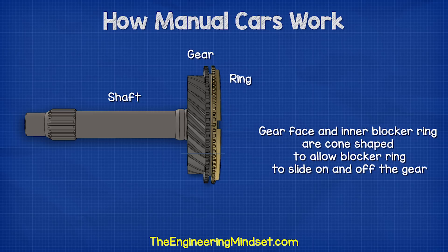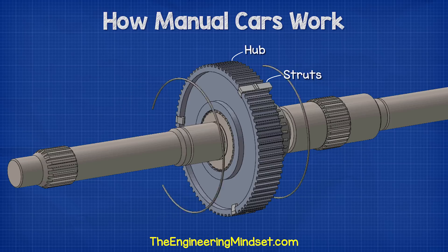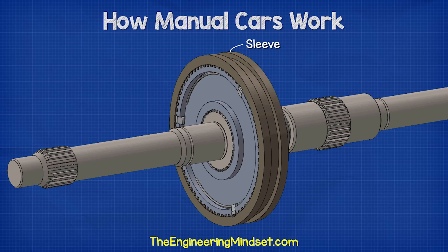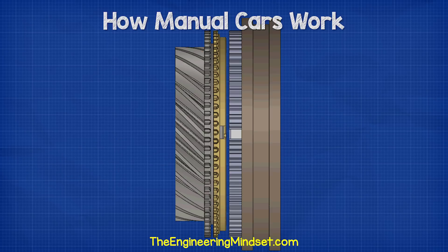This allows the blocker ring to easily slide on and off of the gear. We also have some small struts, which are inserted into the slots of the hub. These are held in place by a radial spring, which pushes them outwards. The sleeve sits over the struts and the hub. A ridge on top of the strut interlocks with the sleeve, and the sleeve will move the struts back and forth. There are also some slots cut into the blocker ring. These will align with the struts. The slots are wider than the strut, which allows the blocker ring to rock back and forth a small amount. The blocker ring rotates with the hub and the sleeve.